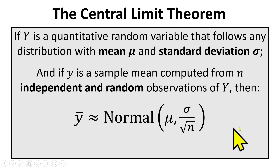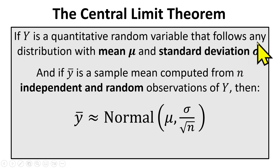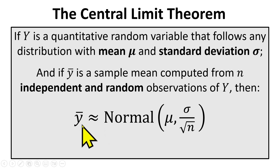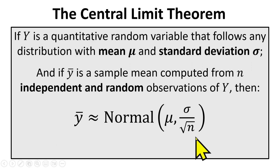An important idea here is that y is a random variable — it has some variability, so each time you measure it you'll get a different value. That variability is measured by sigma, the standard deviation. The standard deviation of a sample mean is always going to be something less than the standard deviation of an individual measurement. This conveys the notion that when you take an average, because you're using more than one measurement, you have more information than you would with a single measurement. That increase in information is reflected by a decrease in the spread or standard deviation.